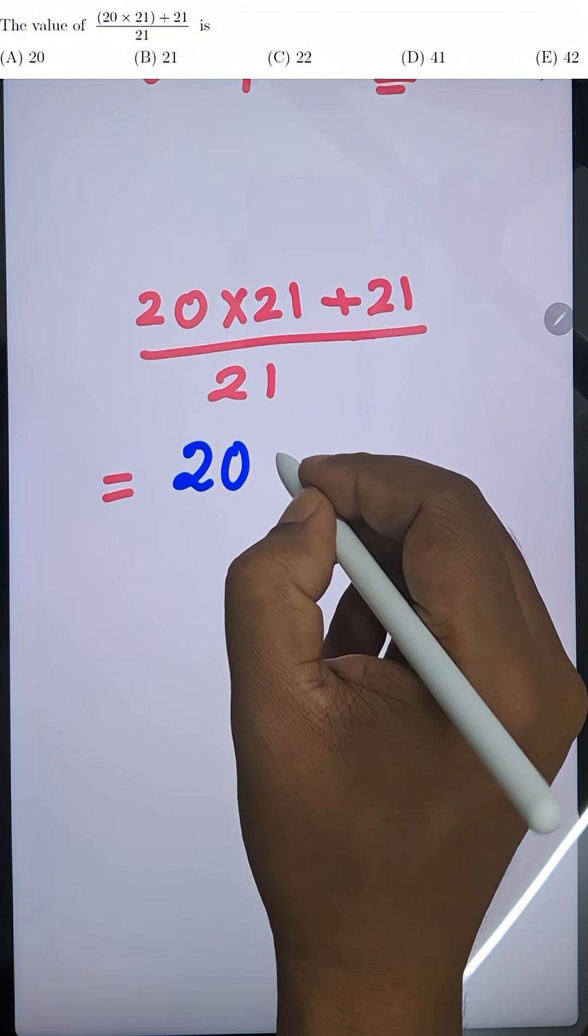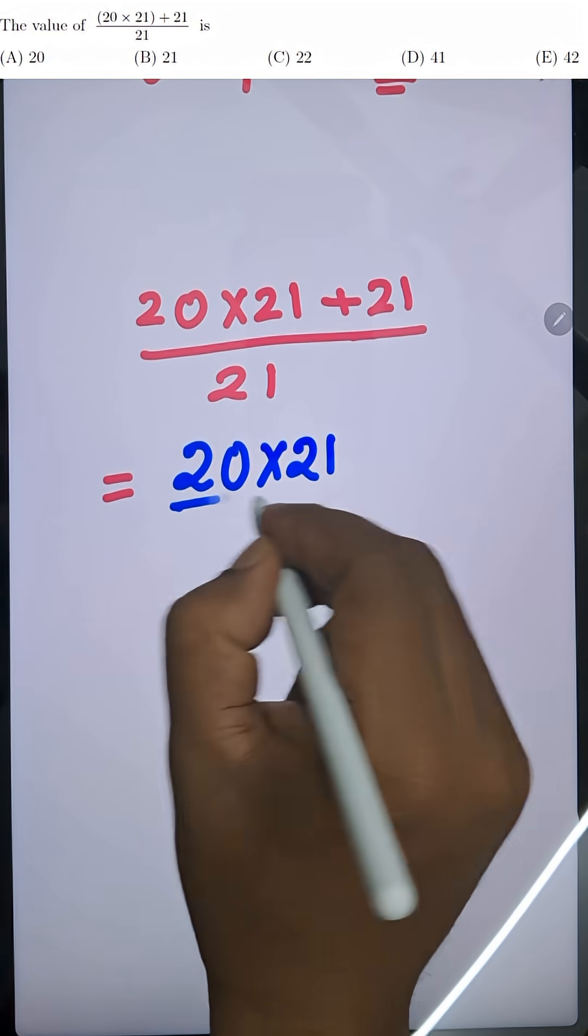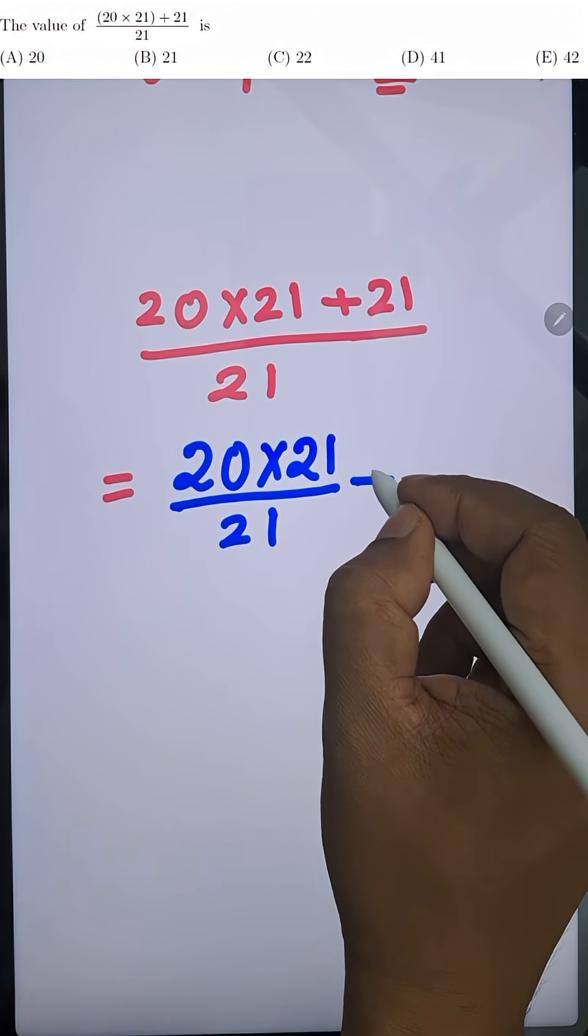First, split the numerator. 20 into 21 by 21 plus 21 by 21.